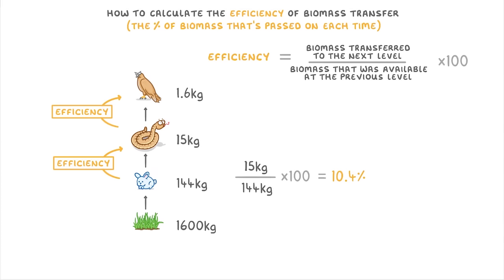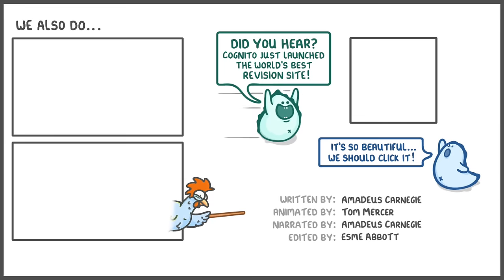For the efficiency between snakes and hawks, it's 1.6 divided by 15, times 100, which gives us 10.7%. That's everything for this video, so if you found it useful please give us a like and subscribe.